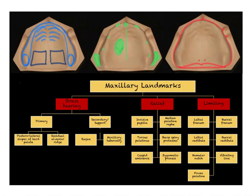Taking a quick revision of the anatomical landmarks of the maxillary arch: the ones in blue are the primary and secondary stress-bearing areas, the green ones are the relief areas, and the red ones are the limiting areas. The six relief areas of the maxillary foundation according to Boucher are: incisive papilla, mid palatal raphae, palatal torus, cuspid eminence, sharp spiny spicules, and the zygomatic process of maxilla.